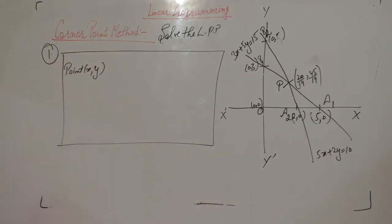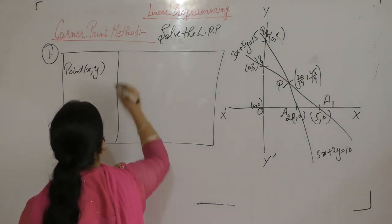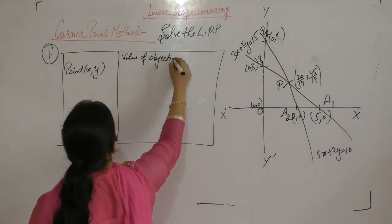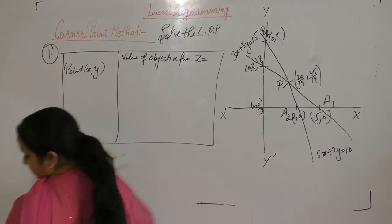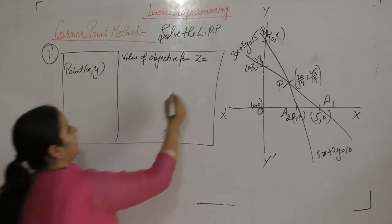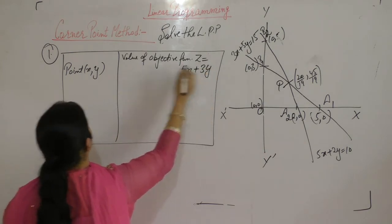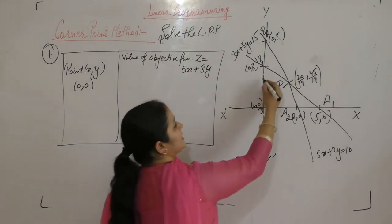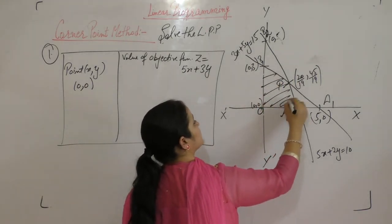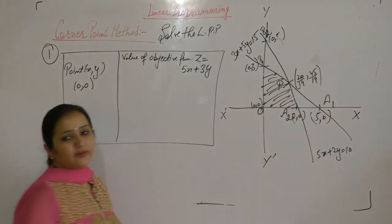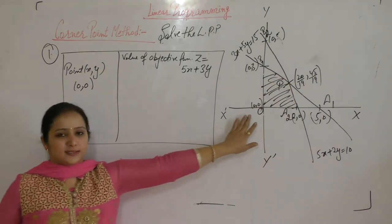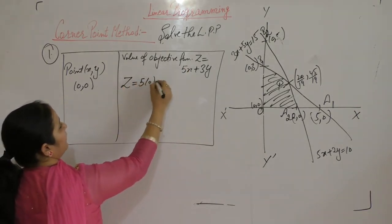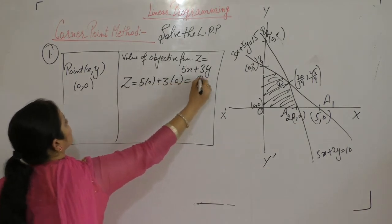After finding the points, now the common points are the corner points of the shaded region. We have point x-y, value of objective function z. Z equals 5x plus 3y. First point is 0, 0. Put the value: z is 5 times 0 plus 3 times 0, that is 0.